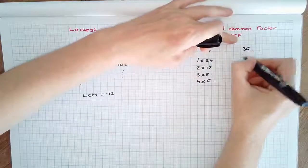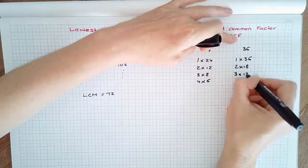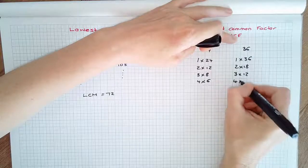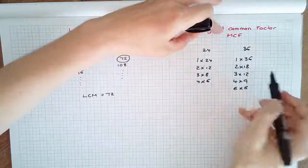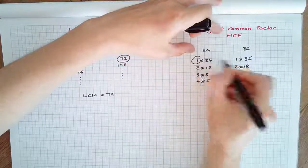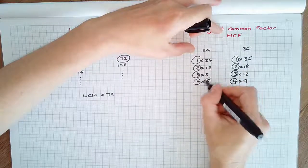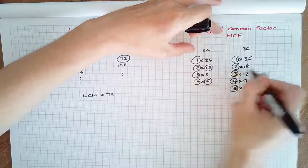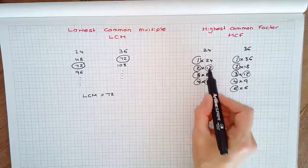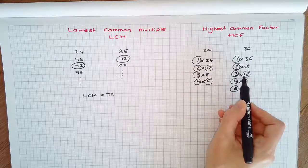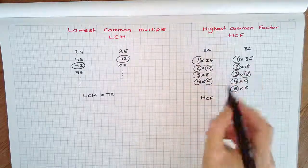The factors for 36, we can get 1 times 36, 2 times 18, 3 times 12, 4 times 9, and 6 times 6. So the factors there are listed. The common factors in each, they both have 1 and 2, 3, 4, 6, and 12. We're looking for the largest number that is a factor of each number. And you can see the largest number that we've circled is 12. So the highest common factor of 24 and 36 is 12.